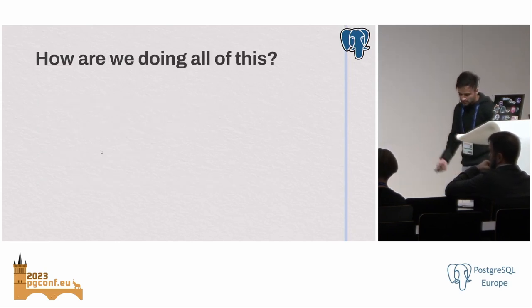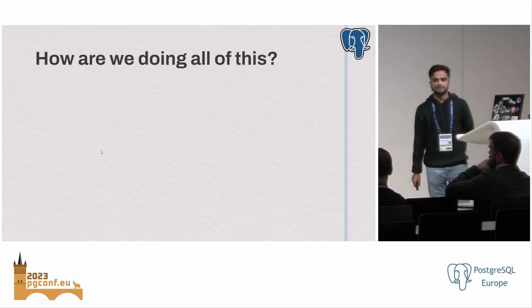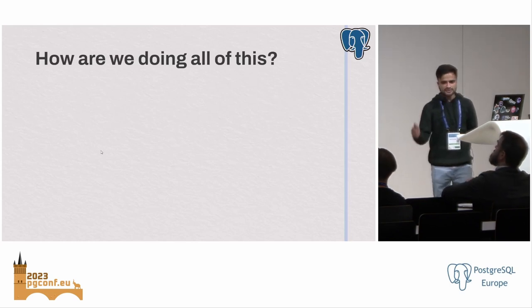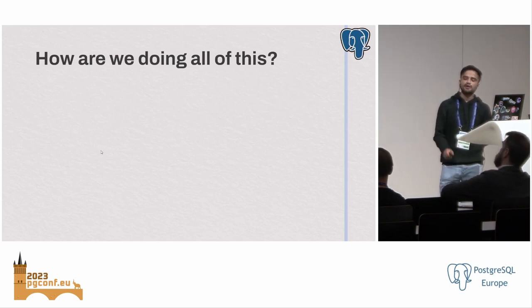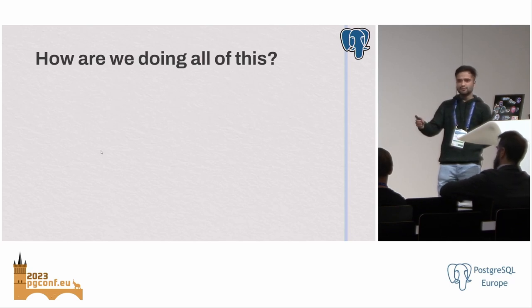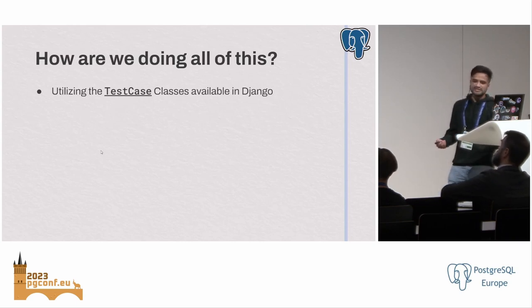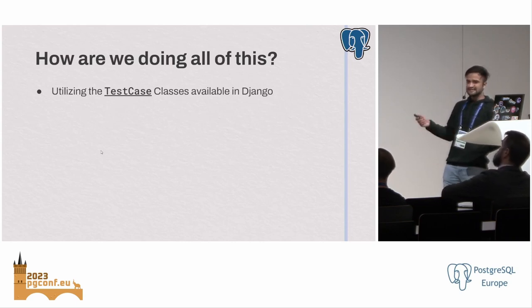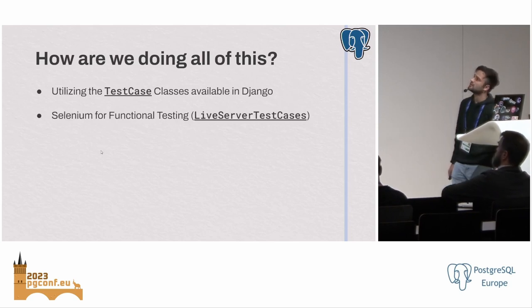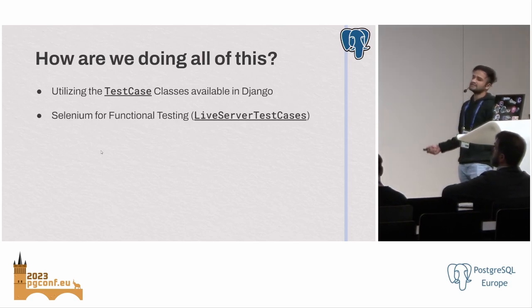So let's come to the question of how we are doing all of this. The testing harness is a separate repository from the main PGWeb codebase. Since PGWeb is built using Django, we are utilizing the test case classes present in the Django framework. We are also using Selenium for functional testing.